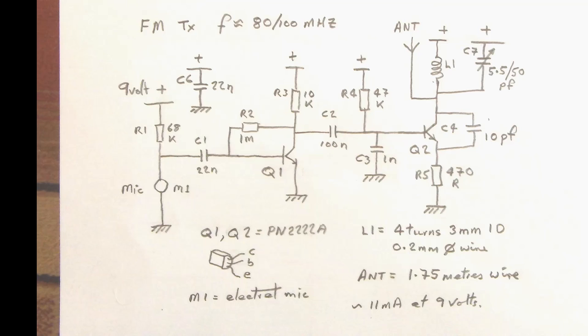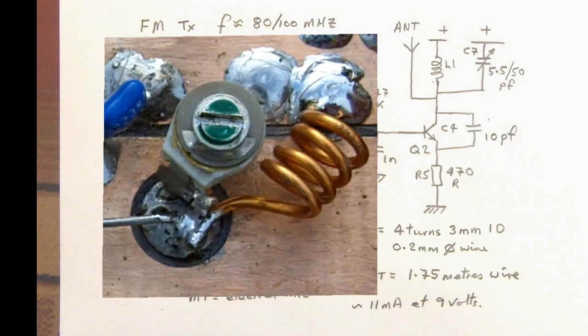I hadn't got the capacitors that they had specified, but I had got the 5.5 to 50 pF. And what I've done is I've adjusted the coil L1 to give me an operating frequency around 84 or 85 MHz with most of the capacitor engaged, and that's important.